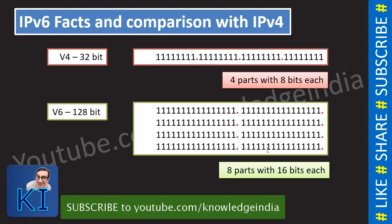IPv6 has been planned so that with the increasing number of devices the IP address requirement can be met. Every section of an IPv6 address is 16 bits and is written in hexadecimal form, not decimal. We will see examples of IPv6 as we move forward. In IPv4, we used decimal numbers.